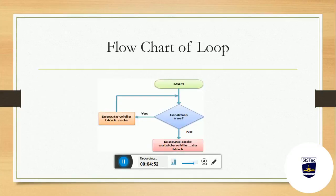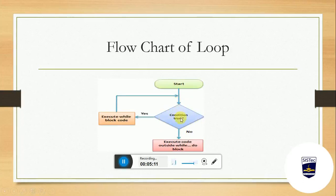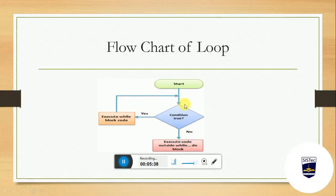इसके बाद आता है हमारा flow chart of loop. Loop कैसे process करता है, कैसे काम कर रहा है? Loop start होता है, फिर condition check होती है। Condition अगर true है तो loop के codes execute होते हैं, और फिर वापिस condition check करने जाता है। यह loop तब तक run करता है जब तक condition false नहीं हो जाती। जैसे ही condition false हो जाती है, loop के बाहर का code execute होता है।